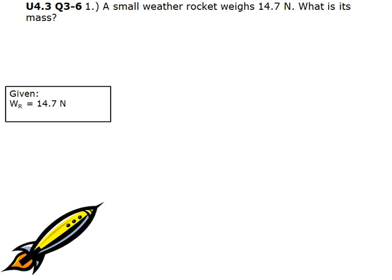We are given the weight of the rocket, which is 14.7 newtons. To find the mass of the rocket, we write the equation force of gravity equals mass times gravitational constant.